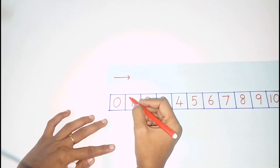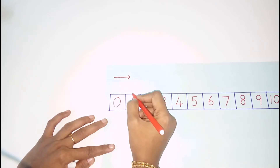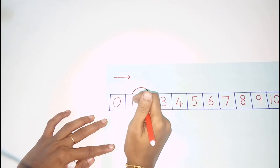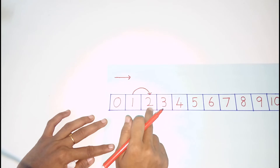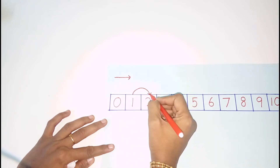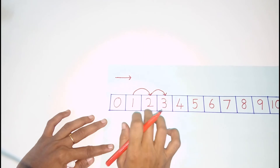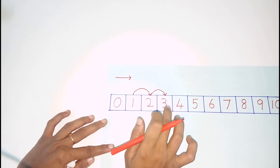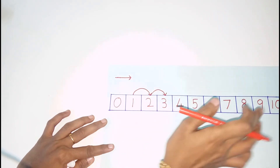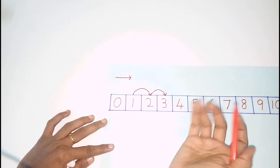Which number comes after 1? You will put the number strip in front of you and put an arrow mark. Which number comes after 1 — we will repeat that. Which number comes after 2? When you do this in the first step, you will be able to register the after numbers. You will practice the after numbers this way.